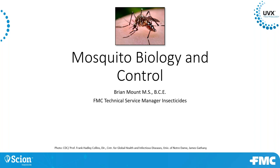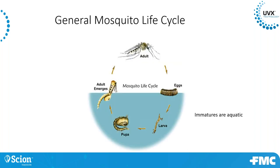Moving on to mosquito biology and control — we'll go over their life cycle, differences between species, and why that matters. The adult mosquito lays eggs in water, which hatch into larvae, then pupae, then emerge as adults. The immature stages are aquatic, which could be a potential revenue generator if you have the right licenses to treat water with larvicides.